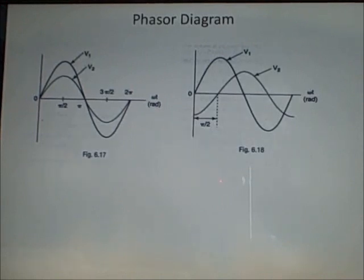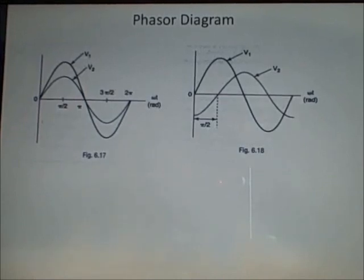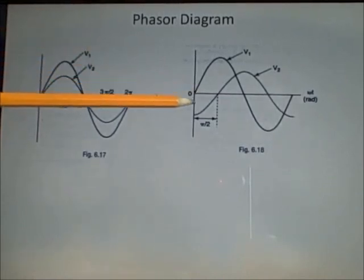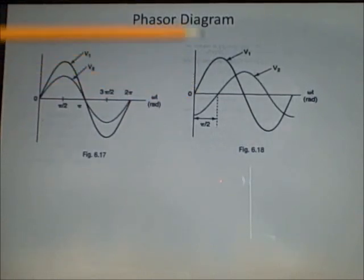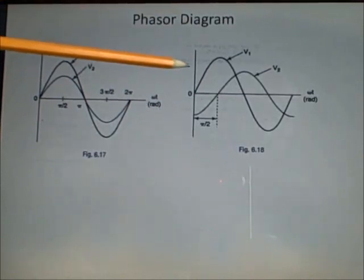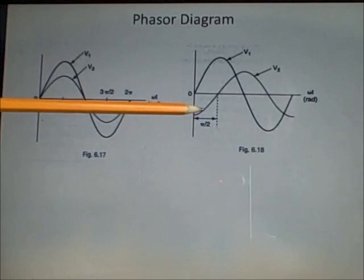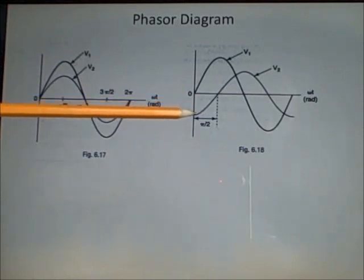In this case, v2 is said to lag behind v1 by pi divided by 2, which is 90 degrees. In other words, v2 starts its cycle 90 degrees after v1.